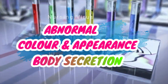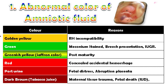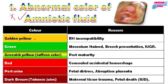The first topic is the abnormal color of amniotic fluid — a very important topic when you are studying OBG nursing. The various colors indicate which disorder: if the amniotic fluid is golden yellow, that indicates Rh incompatibility. If it is green color, that may indicate meconium staining, breech presentation, or intrauterine growth retardation.